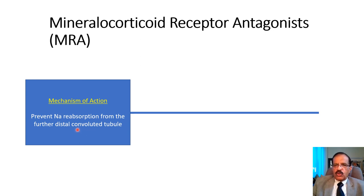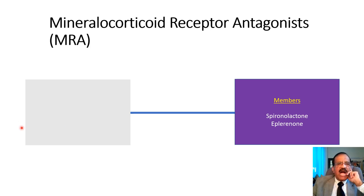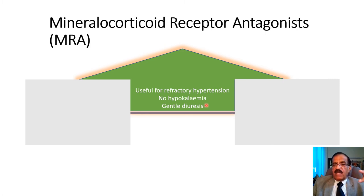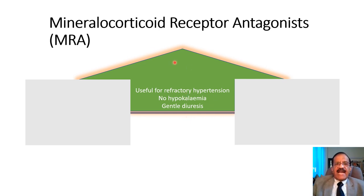These are very mild drugs and they cause natriuresis. The two members of this class are spironolactone and eplerenone. Eplerenone is now available in our country as well, but spironolactone is a very old drug. The plus side is they are useful for refractory hypertension — when somebody is not responding to adequate doses of three drugs, such as one RAS blocker, amlodipine, and a thiazide or thiazide-type diuretic, and blood pressure is still more than 140/90. That is classified as refractory hypertension, and that is where mineralocorticoid receptor antagonists find their place.